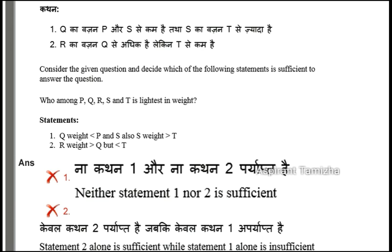Let's see if the first statement is possible. The first statement says Q is lighter than P, S is the lightest, and T is the lightest.